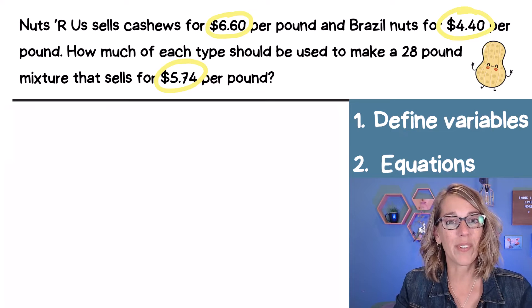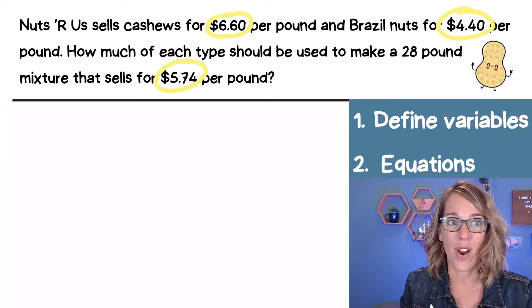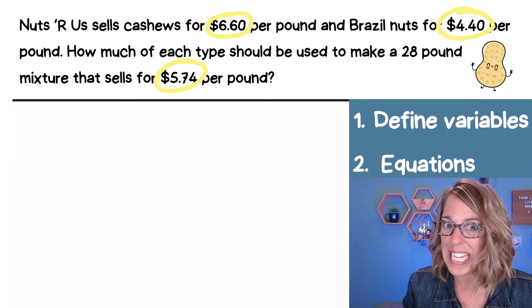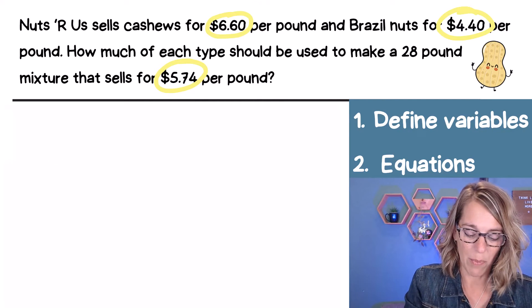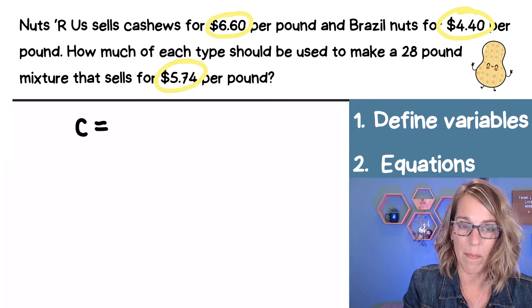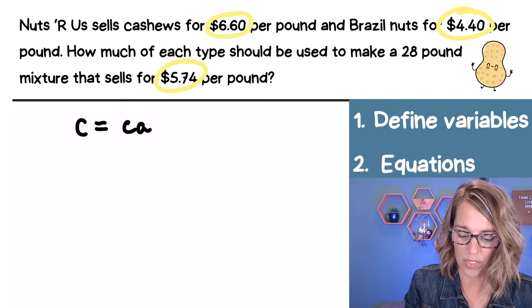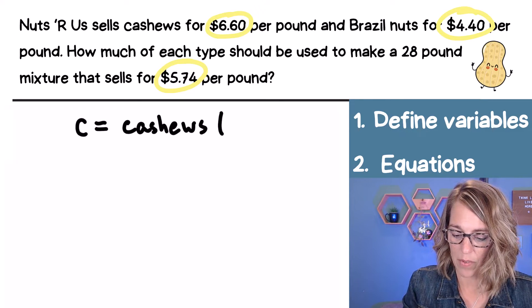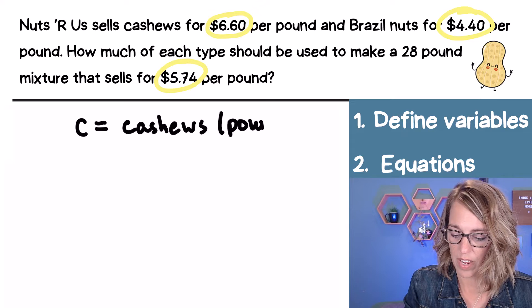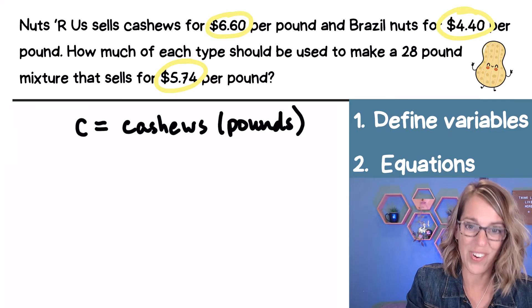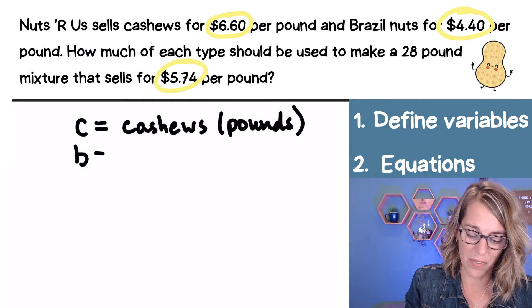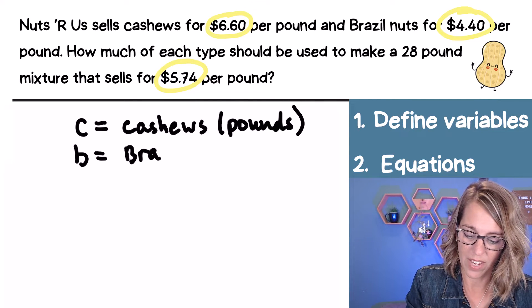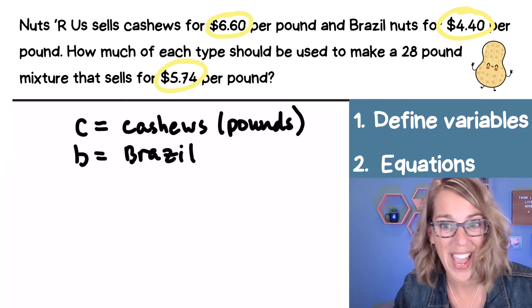Here come my steps. I want to start by defining those variables, and remember that those variables are amounts. This time I have cashews. So instead of X and Y, let's use C for cashews. These are my amounts. So C is equal to the amount of cashews. And these are in pounds. And then we've got Brazil nuts. So I'm going to use a lowercase b for Brazil nuts. And this is going to be Brazil. Again, this is my quantity in pounds.